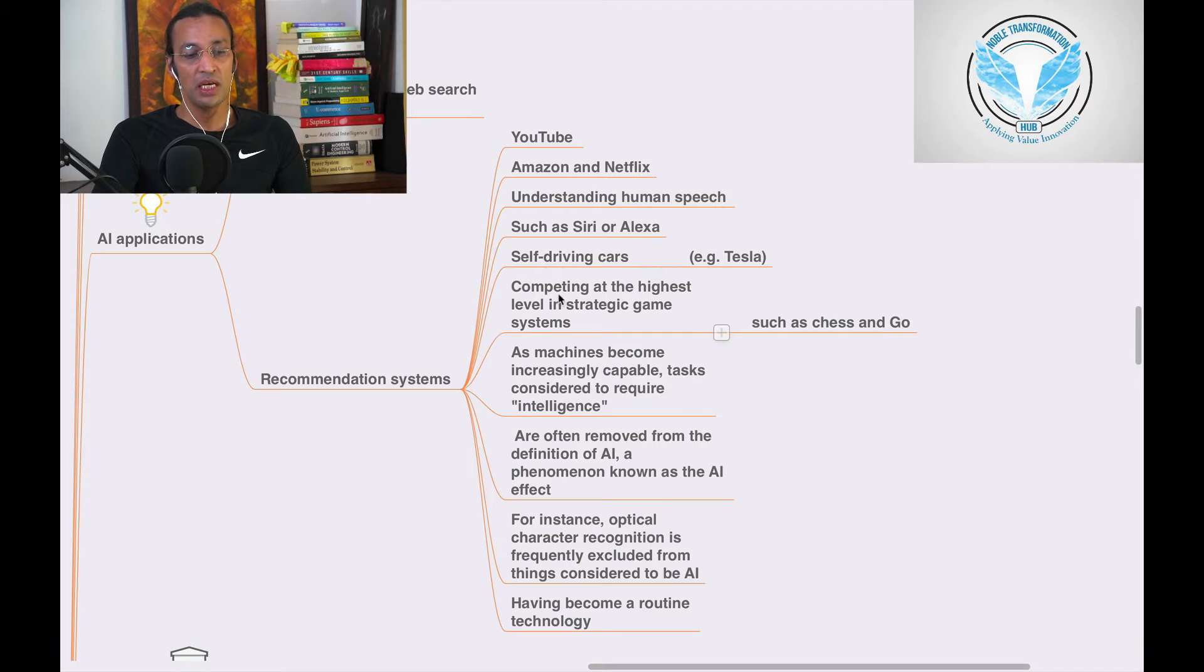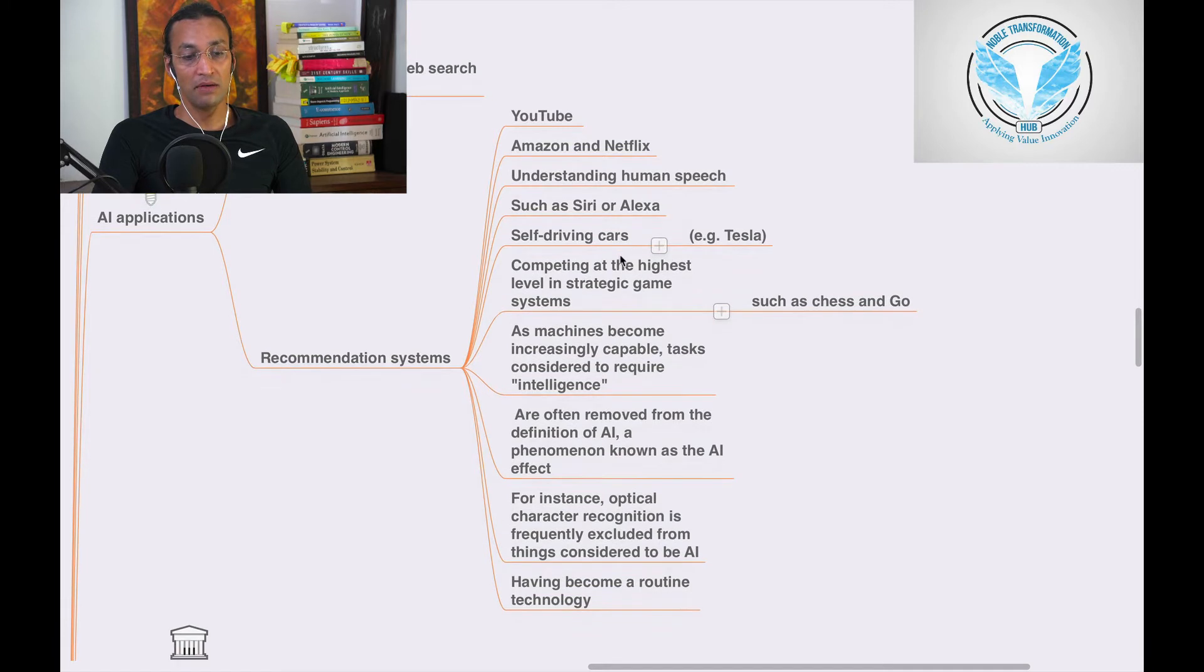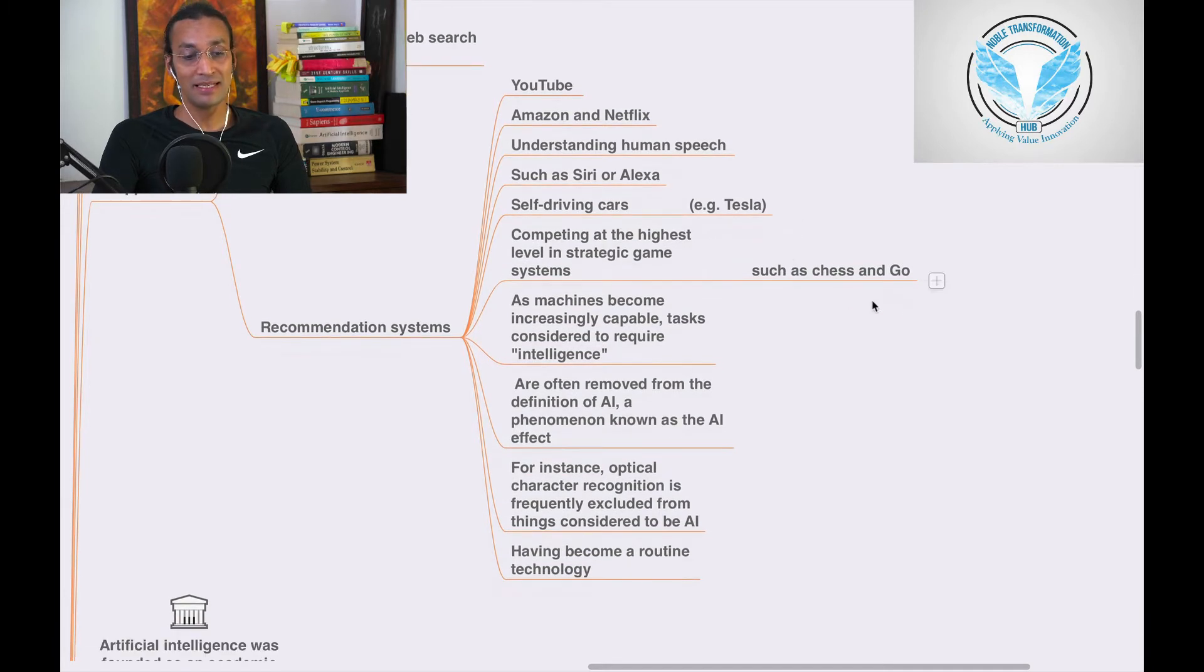Self-driving cars like Tesla are another application. AI is currently being implemented in all these areas: Netflix, Amazon, YouTube, Siri, and self-driving cars.